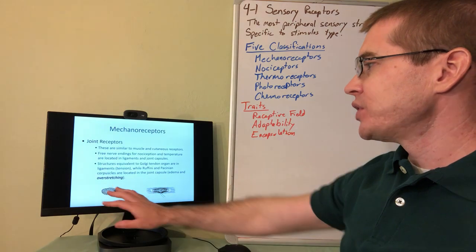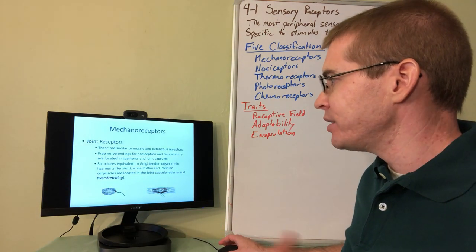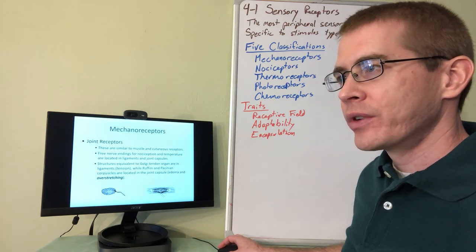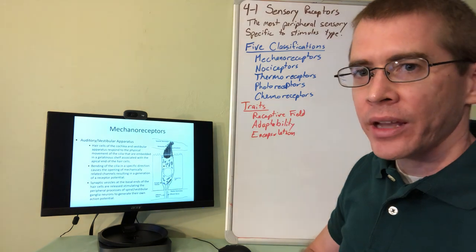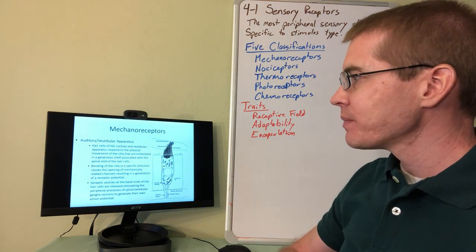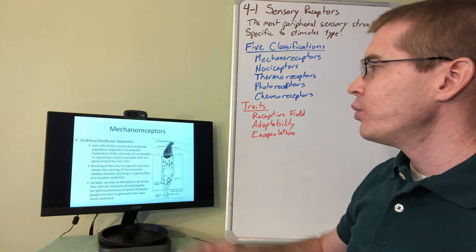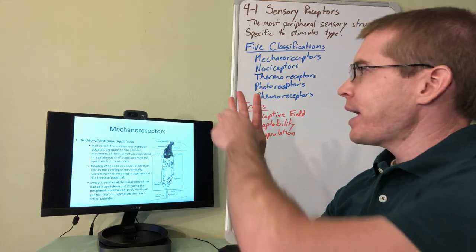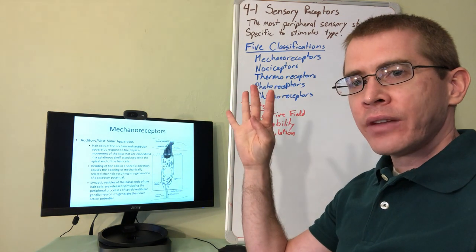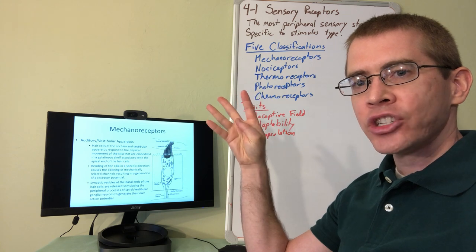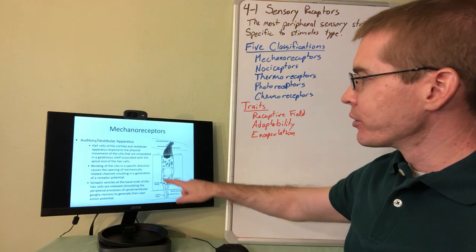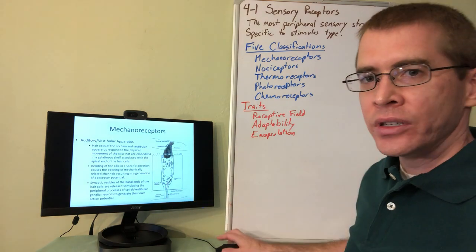Briefly, joint receptors are Pacinian corpuscle and Ruffini ending-type structures located within the joint capsules, detecting inflammation, edema, and overstretching within a joint. There are also mechanoreceptors in the auditory and vestibular system called hair cells. These hair cells have cilia that project upward and are located within fluid. As your body moves or sound waves move through the fluid, these cilia are mechanically moved, causing ion channels to open and an action potential to be sent through the hair cell into the afferent ascending neuron.